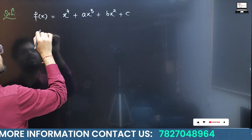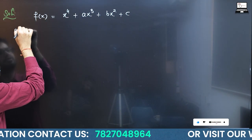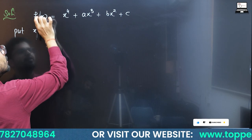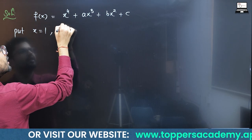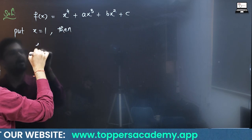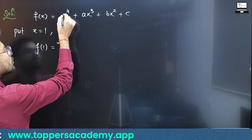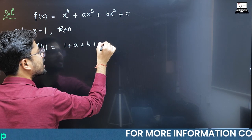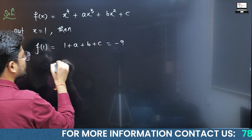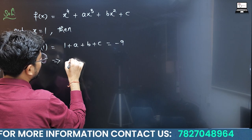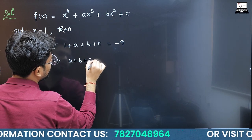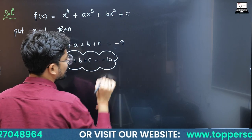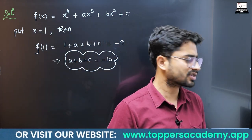We are given f(1) = -9. So put x = 1: f(1) = 1 + a + b + c = -9. From here, a + b + c = -10.